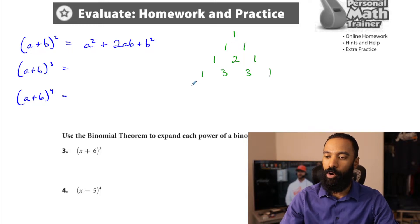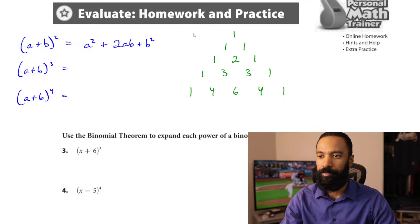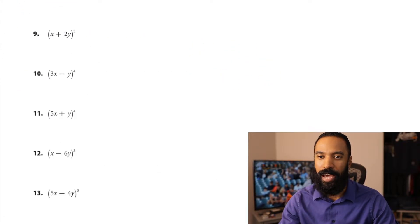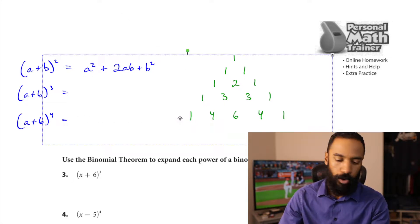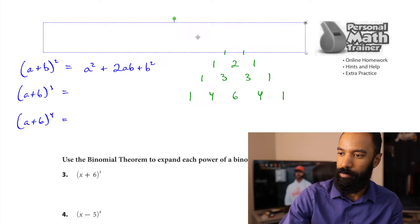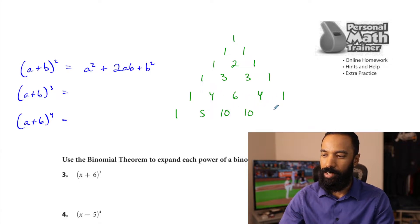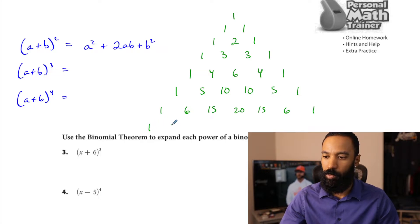Row four: one, then one plus three is four, three plus three is six, and four and one. I'm going to do at least seven rows total. Row five: one, five, ten, ten, five, one. Row six: one, six, fifteen, twenty, fifteen, six, one. And row seven: one, seven, twenty-one, thirty-five, thirty-five, twenty-one, seven, and one.